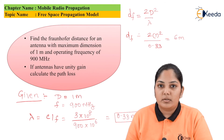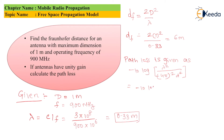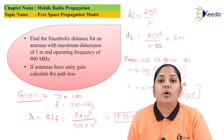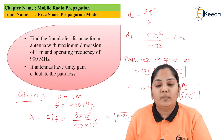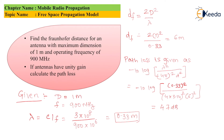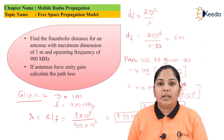Finally, we calculate the path loss using the free space path loss formula with unit gain, substituting all the values. The final answer for path loss comes out to 47 dB. So the path loss in this scenario is 47 dB.